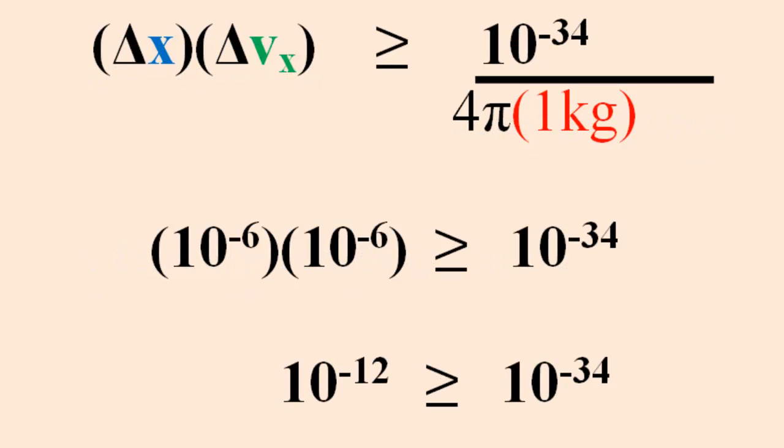Rather than an electron, something we can't see or feel, consider something more tangible, like a 1 kilogram object. The fraction on the right simplifies to approximately 10 to the minus 34. That means we could achieve great accuracy or minimal error in the position and the speed of this object.